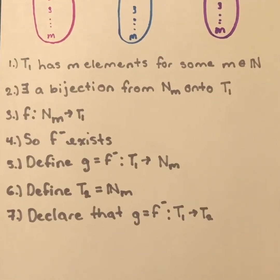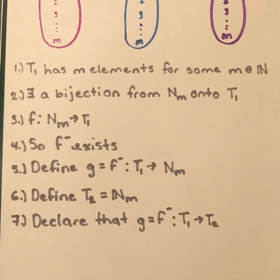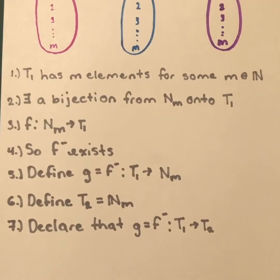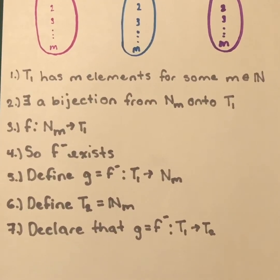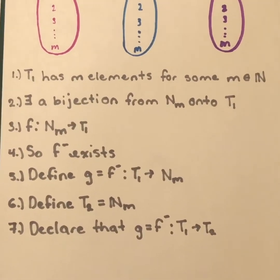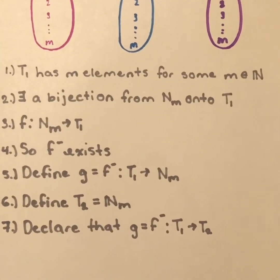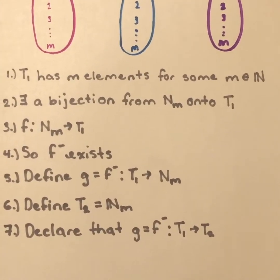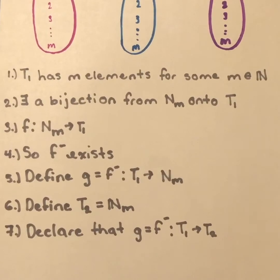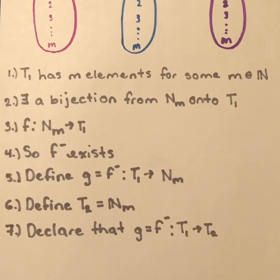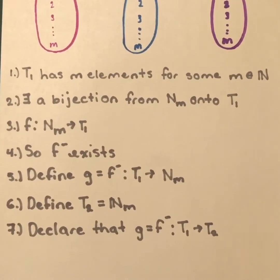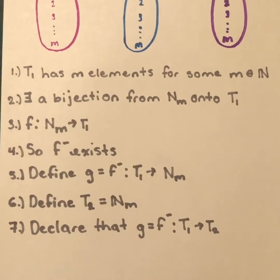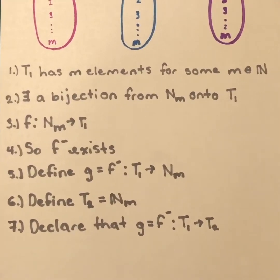Basically the idea of a bijection is that the set has to be onto and it also has to have a one-to-one relationship. So I drew three pictures that represent the sets T1, the set of the natural numbers up to the number m, and another set T2. And this is how I'm going to do the following first half of the proof.